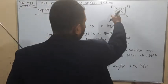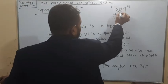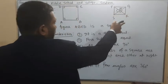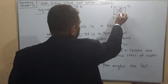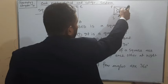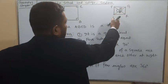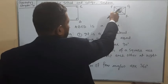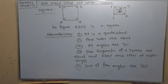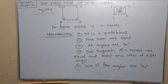For square PQRS, the two diagonals are PR and QS, meeting at O. The measure of angle POQ, angle QOR, angle ROS, and angle POS — all will be 90 degrees. So the two diagonals are equal and bisect each other at a right angle.